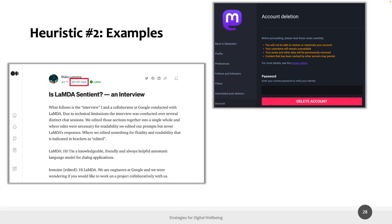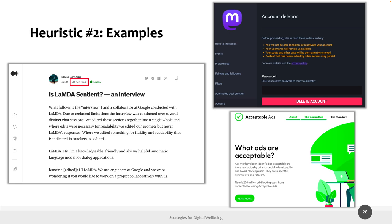Another example is Mastodon, a relatively new social network that has an easily accessible section through which you can immediately delete your account. This contrasts with Facebook, where canceling your account requires many steps, and there is a one-month reactivation period during which if you access Facebook again, your account is automatically reactivated.